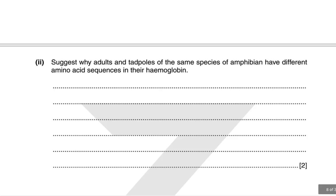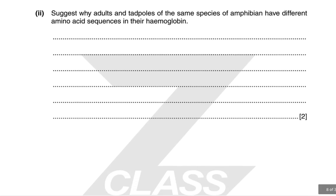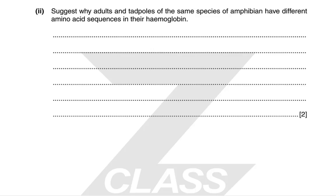Adults and tadpoles of the same amphibian species have different amino acid sequences in their haemoglobin because tadpoles are aquatic and adults are partly terrestrial. There are different oxygen concentrations between the two habitats, so haemoglobin with different oxygen affinities is needed. Once they go through the developmental phase, amphibians will express a different variation of haemoglobin to cope with terrestrial environments.